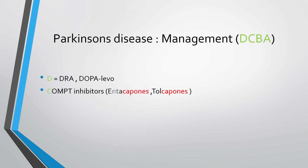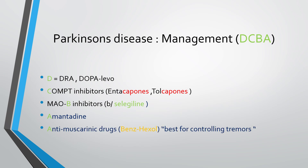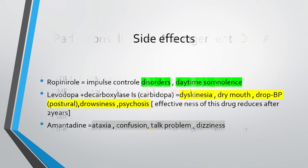The drug classes used in management are dopamine agonists, levodopa, COMT inhibitors, MAO-B inhibitors, amantadine, and anticholinergic drugs — anticholinergics are the best for controlling tremors. Side effects to note: ropinirole causes impulse control disorders and somnolence; levodopa and carbidopa combination causes dyskinesia, dry mouth, postural drop in BP, drowsiness, and psychosis; amantadine causes ataxia, confusion, speech problems, and dizziness.